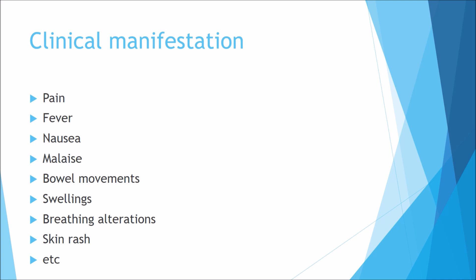Clinical manifestations are the signs and symptoms a disease can produce. Common examples include pain, fever, nausea, and malaise — the general feeling of illness. Changes to bowel movements can indicate digestive disorders. Swelling, such as feeling an abnormal lump in the breast or testes, can be an early indicator of cancer. Breathing alterations — struggling to breathe — could indicate emphysema or lung cancer. Skin rashes can indicate localised infections. There are many other examples as well.